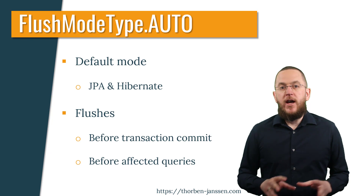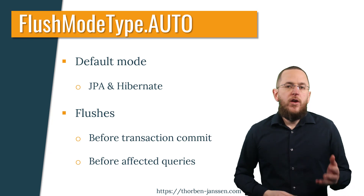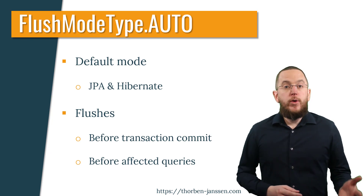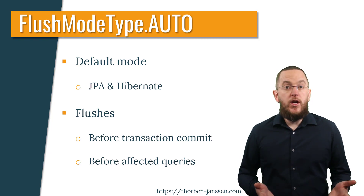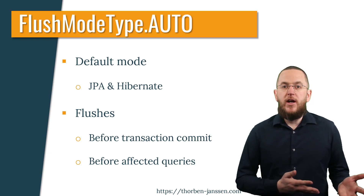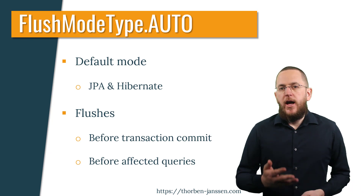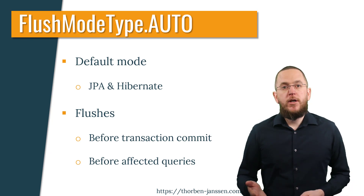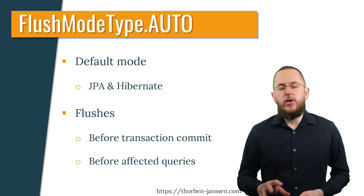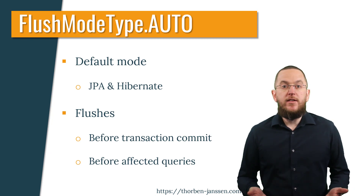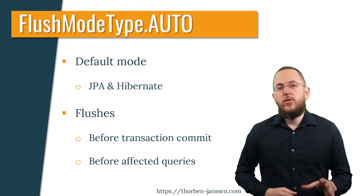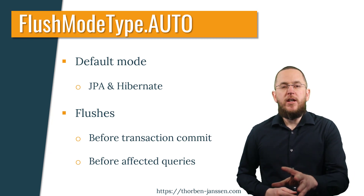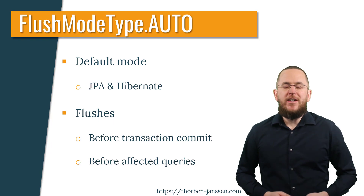This is based on the query space, which I explained in a previous video. For every JPQL or Criteria query, Hibernate generates the SQL statement and therefore knows which database tables are used in the query. Hibernate can use that when performing a dirty check on all entity objects in the current persistence context. If it finds a dirty entity mapped to one of the tables referenced by the query, it needs to flush those changes to the database. Let's take a look at an example.